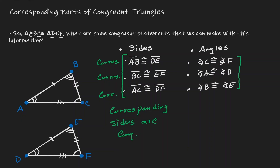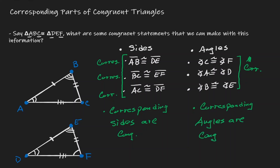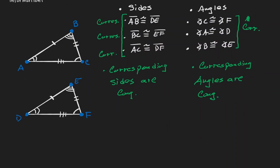The same statement can be said in terms of angles — all of these angles are corresponding, so corresponding angles are congruent. We can generalize this statement because regardless of whether they were sides or angles, they were parts of the triangle. So what we can say now is that corresponding parts of congruent triangles are congruent.